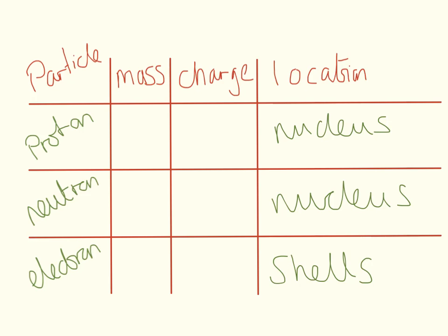Now protons have a mass of one, neutrons also have a mass of one, and electrons have a mass of zero. Now I'll let you in on a little secret. Electrons do have a mass, but it is so tiny that we don't even bother writing it down.